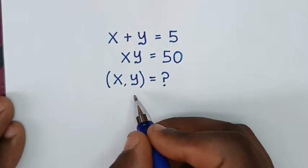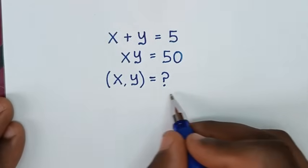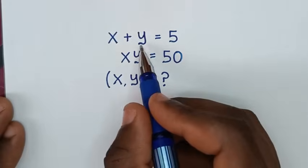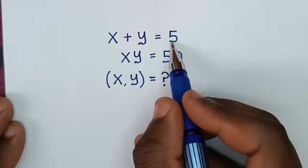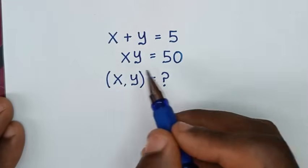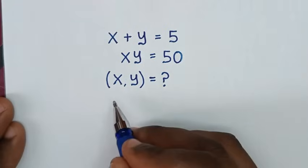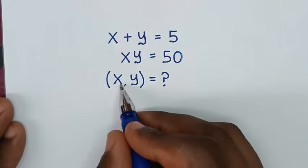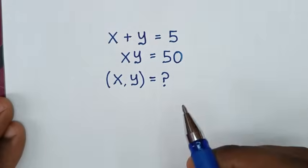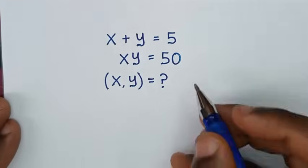Hello, you are welcome to solve this math problem, which is x plus y is equal to 5, and x times y is equal to 50. We need to find the values of x and y from these two systems of equations.